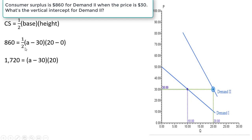Cross-multiplying here, 2 times 860 gives us $1,720. And then 20 times A here, and then 20 times negative 30, we get the following result. Adding 600 to both sides, and now dividing through by 20. The vertical intercept, where this second demand curve touches the vertical axis, is going to be at $116.